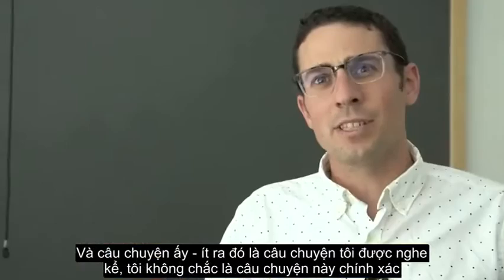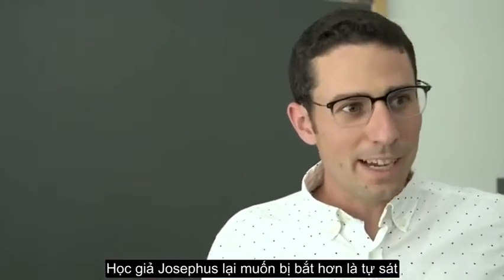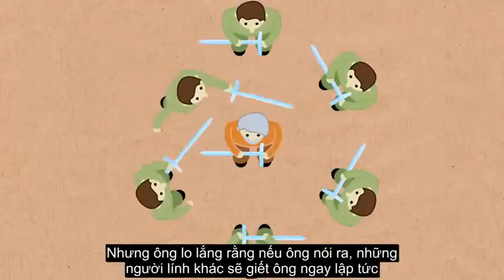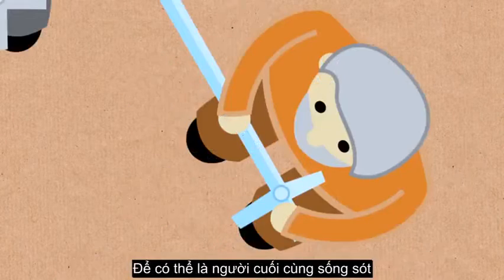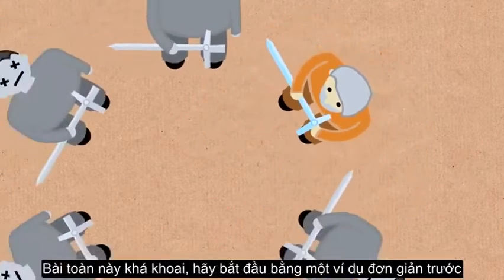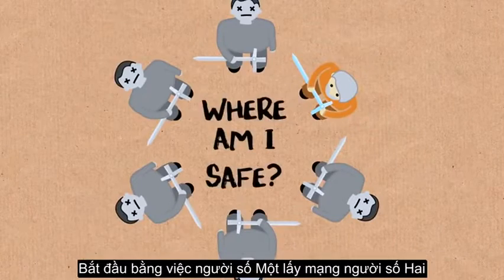So they decided to come up with a system to avoid getting captured or suicide. They'd sit in a circle and the first man would kill the guy to the left of him. The next remaining living person would kill the next remaining living person with their sword and they'd go around like this until there was only one person left and then the last person would have to commit suicide rather than get captured.